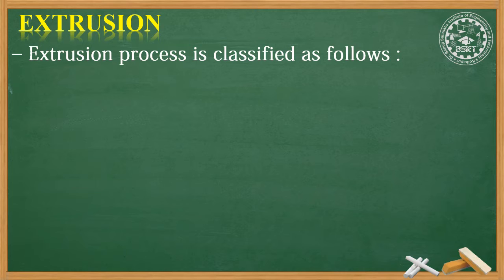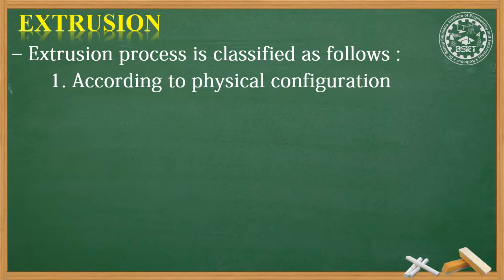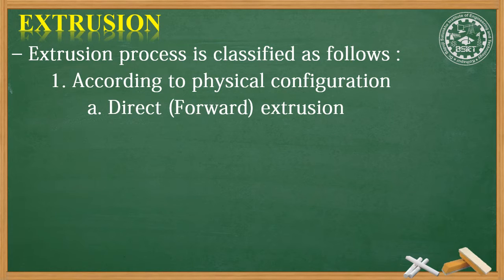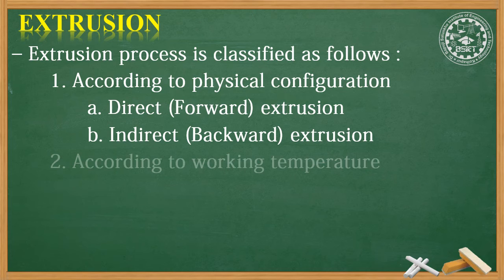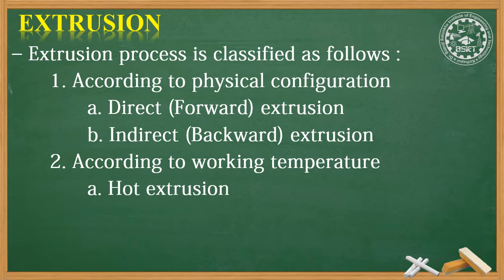The extrusion process can be classified in two ways. First, according to the physical configuration: direct extrusion (also called forward extrusion) and indirect extrusion (also called backward extrusion). Second, according to working temperature: it can be hot extrusion or cold extrusion.